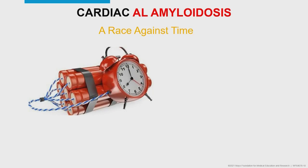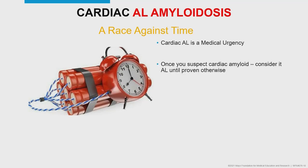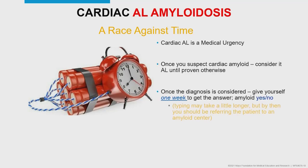Dr. Grogan stresses that AL amyloid is a race against time — a medical urgency. Once you think someone has amyloid, assume it's AL until proven otherwise, because a slow methodical workup worsens prognosis for AL patients. You should assume it's AL amyloid until you can prove it's TTR. Once diagnosis is considered, aim to answer yes or no within a week using blood work, testing, and fat aspirate. Then assume AL and work on the referral process, being pleasantly surprised if it's another subtype.